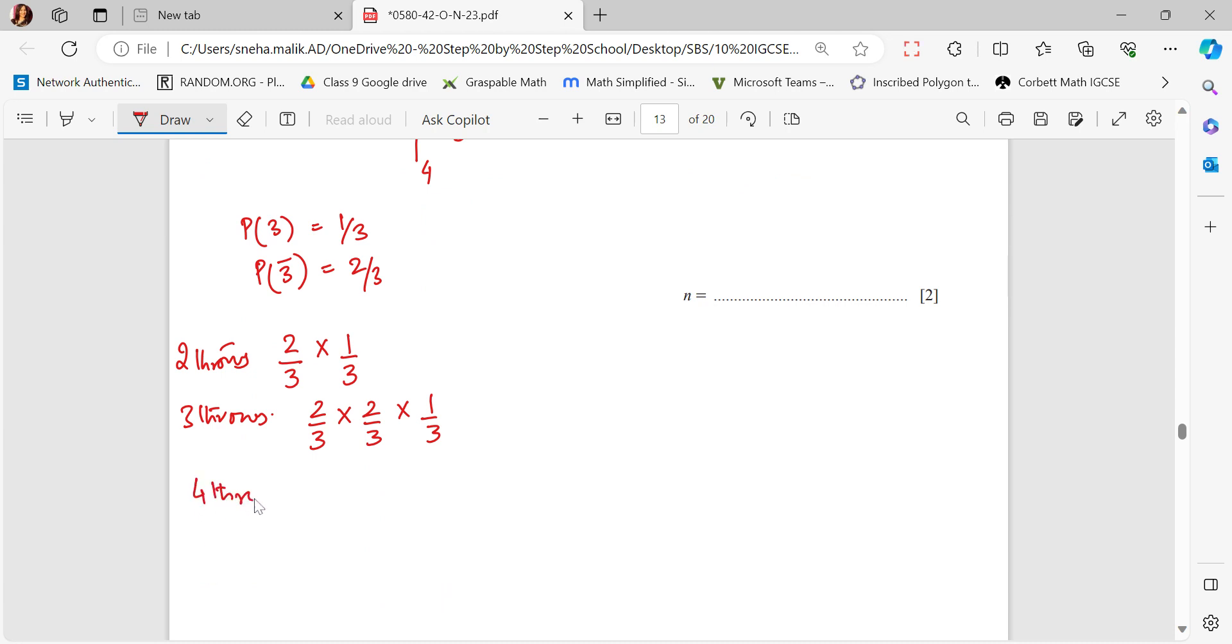If I just have to make a sequence, in the nth throw, that means 2 by 3 is coming n minus 1 time. You can see here it is coming 1 time, here it is coming 2 times, here it is coming 3 times. That means it is n minus 1 times 1 by 3, which is the probability of 3 coming in the nth throw. Now I simply solve this equation.